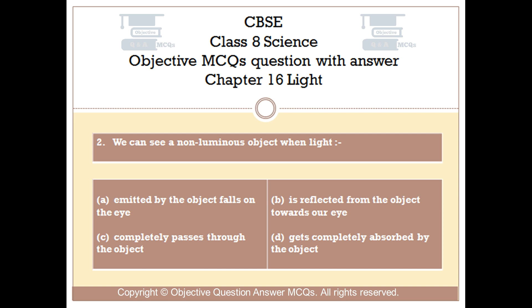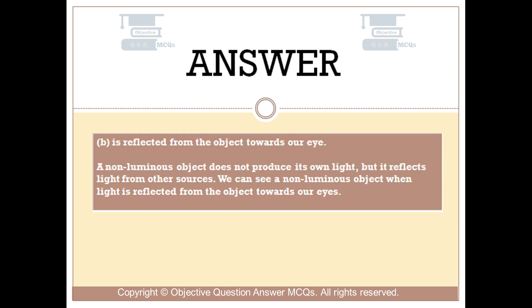Question number 2: We can see a non-luminous object when light. Option A: is emitted by the object and falls on the eye. Option B: is reflected from the object towards our eye. Option C: completely passes through the object. Option D: gets completely absorbed by the object. The right answer is option B — reflected from the object towards our eye. A non-luminous object does not produce its own light, but reflects light from other sources. We can see it when light is reflected from the object towards our eyes.